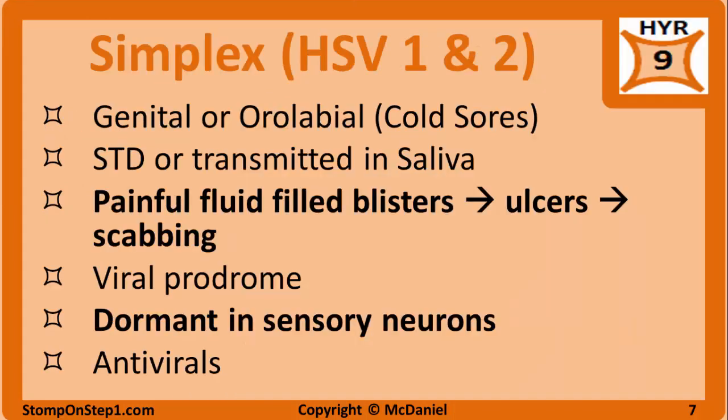There are two types of herpes simplex, HSV1 and HSV2. HSV1 presents primarily on the lips or mouth, aka cold sores or oral labial herpes, while HSV2 presents primarily on the genitalia. HSV2 is most often an STD, while HSV1 is mostly spread by saliva. However, there is a significant overlap between types and you can get both viruses via either route and in either area of the body.